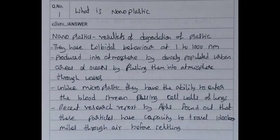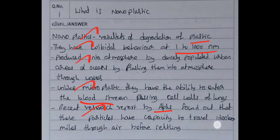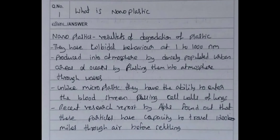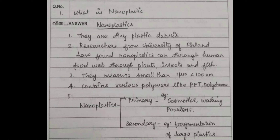You can see both have the same number of lines — one, two, three, four, five points. But the content differs. Nanoplastic degradation of plastic, colloidal behavior at 100,000 nanometers, densely populated urban areas, the bloodstream as the 5th point, the ALFOND research report — even 1,200 miles per hour travel capacity. That is why this is high-quality content.